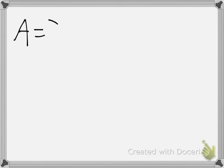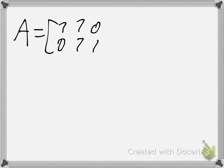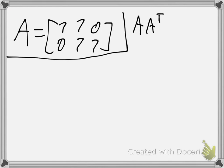Let's do some examples. Let's say you have matrix A: [1, 0, 1; 1, 0, 1]. We'll find the eigenvalues using AAᵀ because we get a smaller matrix. We get the matrix [1, 2; 1, 2]... wait, [2, 1; 1, 2].